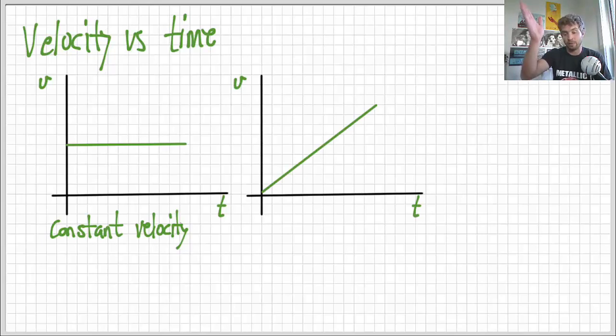If we have up and to the right, if we have a straight line, then the velocity is increasing. Whatever the velocity is here, the velocity has increased over time. So, that means we are accelerating.